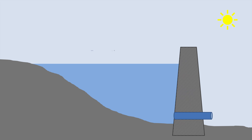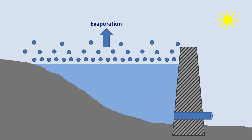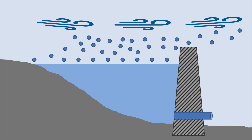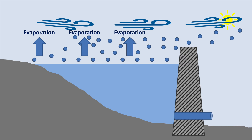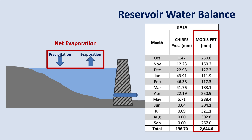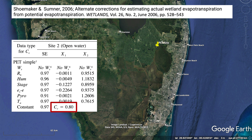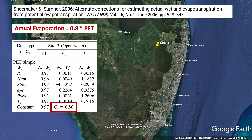When water evaporates from the reservoir surface, a layer of humid air will build up, which will slow down the evaporation rate. If there's some wind, this layer of humid air will be blown away and evaporation rates will increase. However, the wind itself will start to become more humid as it blows over the surface of the reservoir, which will again reduce the evaporation rate. This means it is unlikely that actual evaporation rates from a reservoir surface can reach 100% of potential evapotranspiration rates. The USGS did some research in the Everglades of South Florida and found that actual evaporation from open water was 80% of potential evapotranspiration rates. So this is the magic number we will use.